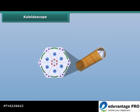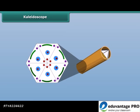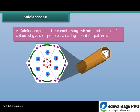What is a Kaleidoscope? It is a tube containing mirrors and pieces of colored glass and pebbles. As the viewer looks into one end, light entering the other end creates a colorful pattern due to the reflection of the mirrors when rotated.